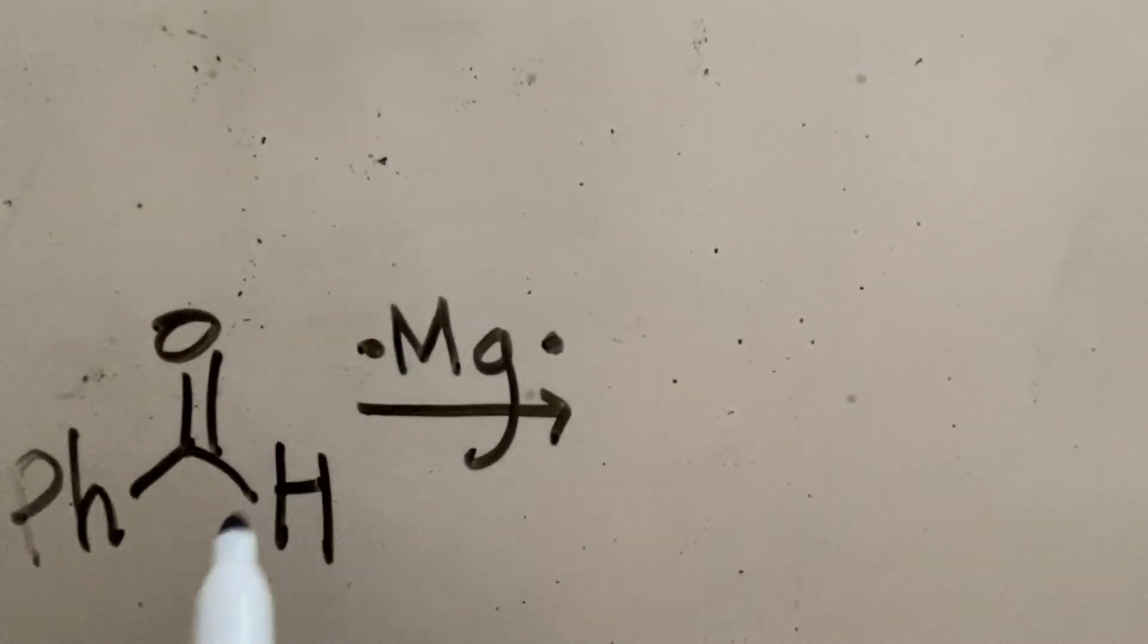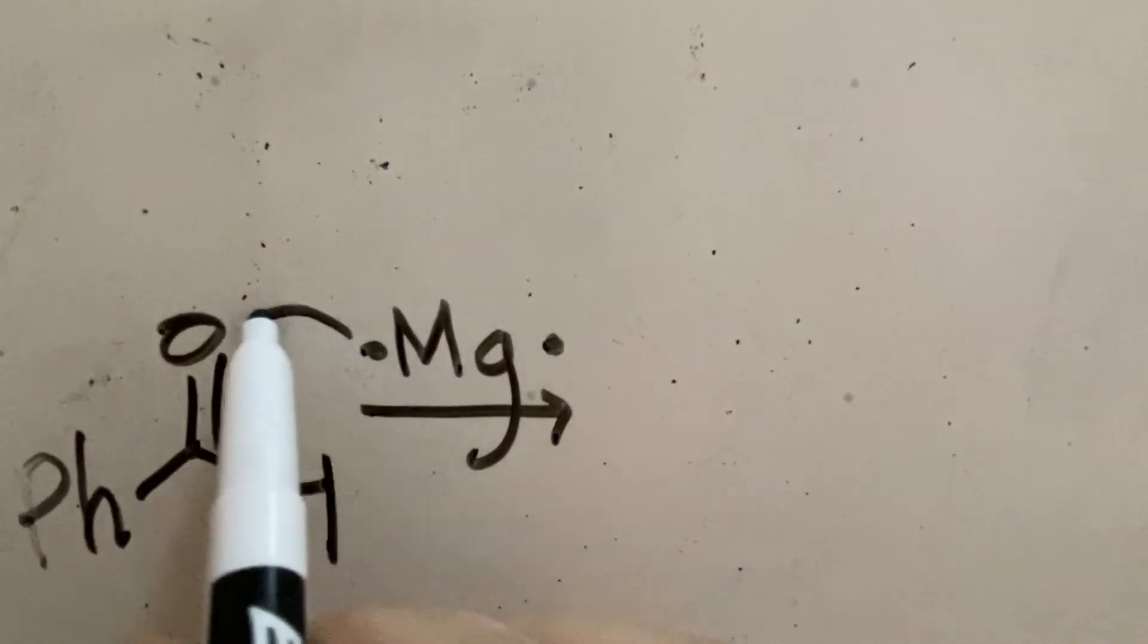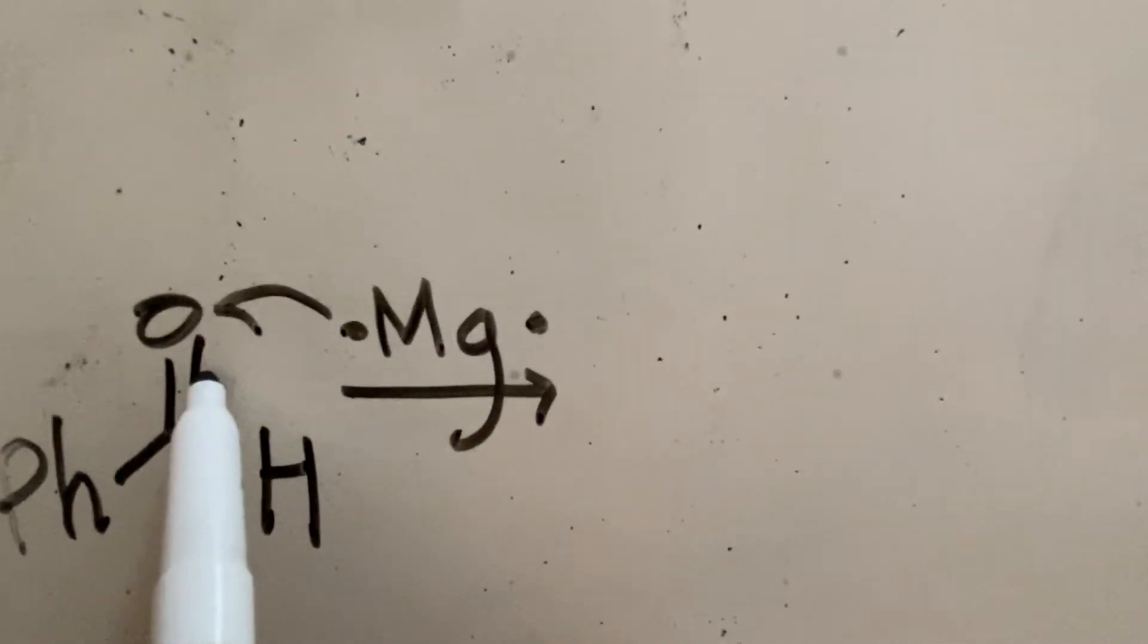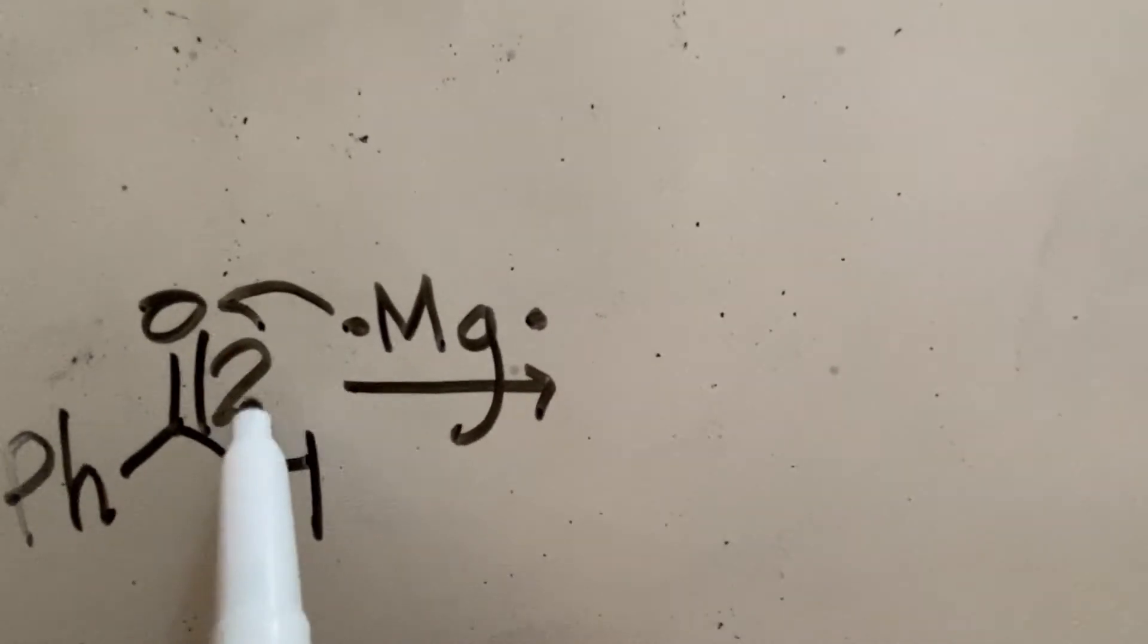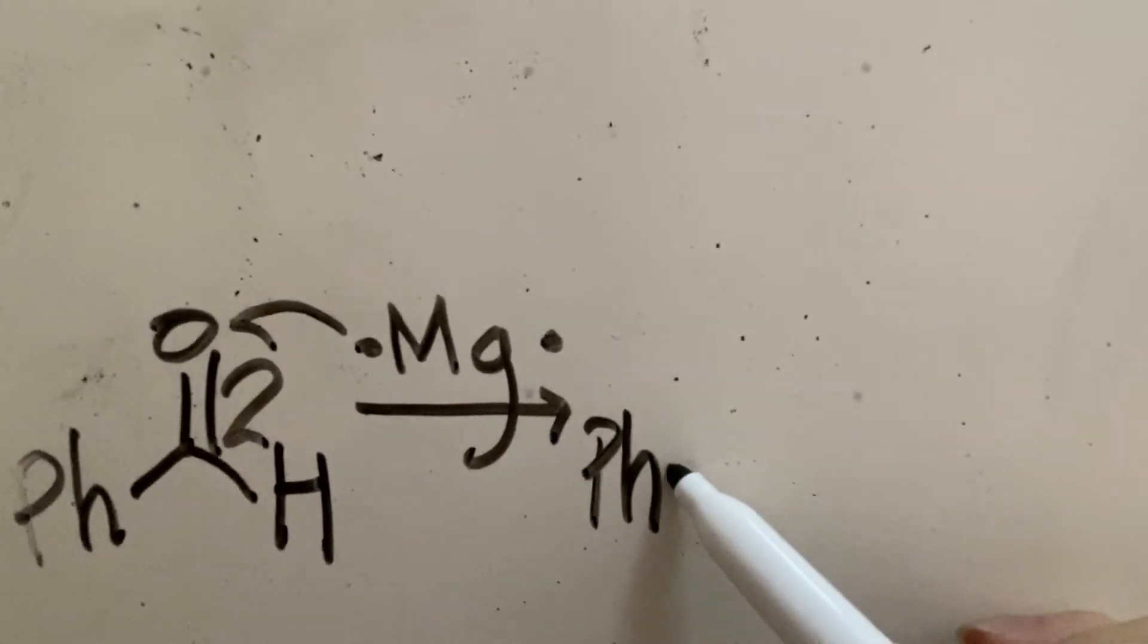Now, one of these electrons is used to form a bond between the magnesium atom and the oxygen on the benzaldehyde, so we draw that with a half arrow. That causes one of the bonds in the carbonyl group to break, shown by another half arrow down to the carbon atom.